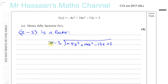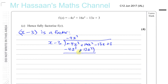So now we say to ourselves: x times something gives us minus 4x cubed — well, that's minus 4x squared. And then we multiply minus 4x squared with these two. So minus 4x squared times x is minus 4x cubed, and minus 4x squared times minus 3 gives you plus 12x squared. Now we have to subtract these two lines. This of course disappears. You have 16 minus 12, which is 4. So you have 4x squared.